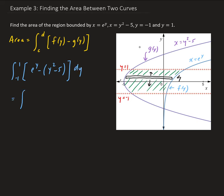So this is equal to the integral from minus 1 to 1 of e to the y minus y squared plus 5. So now we can go ahead and take the integral. So we're going to have the integral of e to the y is just e to the y, the integral of y squared is going to be minus 1 third y cubed and then plus 5y. And we want to evaluate this from minus 1 to 1.